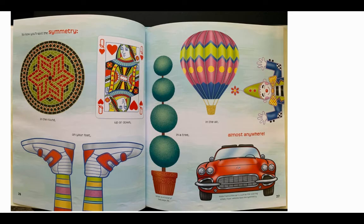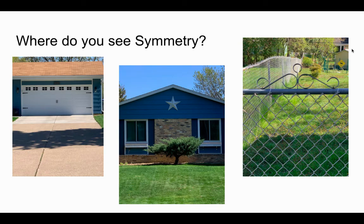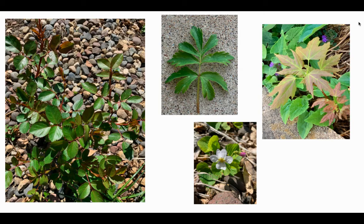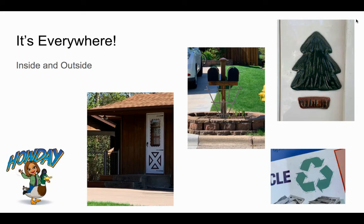Now you'll spot symmetry in the round, on your feet, up and down, in a tree, in the air — almost anywhere. And that's what we're going to do today. I took a walk in my neighborhood and saw all kinds of lines of symmetry. Maybe you can find them too — in these pictures, on these houses, on this fence, even some in nature. Lines of symmetry or rotational symmetry — it's everywhere, inside and outside.